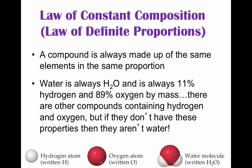A compound is always made up of the same elements in the same proportion — compounds have definite composition. That means the relative number of atoms of each element is the same in any sample. Water is always H2O, and is always 11% hydrogen and 89% oxygen by mass. There are other compounds that contain hydrogen and oxygen, like hydrogen peroxide, but if they don't have those properties they aren't water. This is the law of constant composition, or the law of definite proportions — a compound is always the same in any sample.